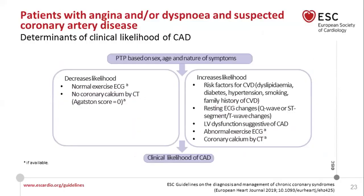Sometimes there are factors that increase or decrease the likelihood of coronary artery disease. If CT is done and there is no coronary calcium (a score of zero), the likelihood is lower. Things that increase likelihood include cardiovascular risk factors, resting ECG changes, erectile dysfunction suggesting coronary artery disease, abnormal exercise ECG, and coronary calcium on CT. Different classification systems, such as those from the UK, incorporate risk factors into the categories.